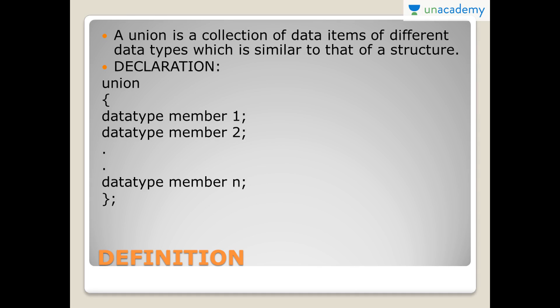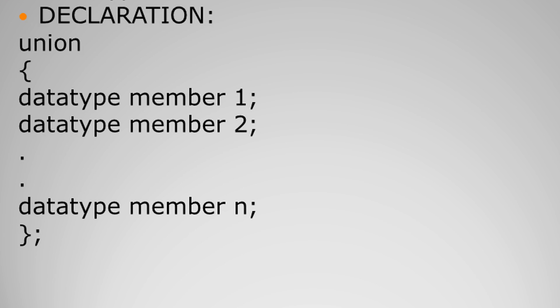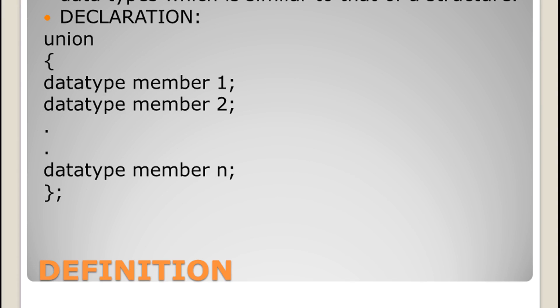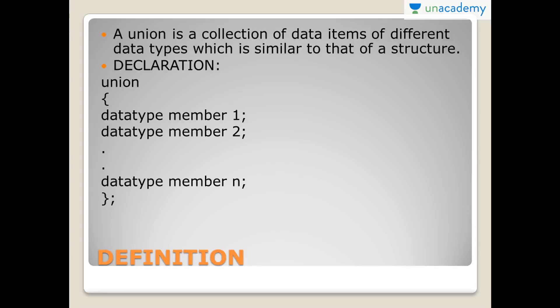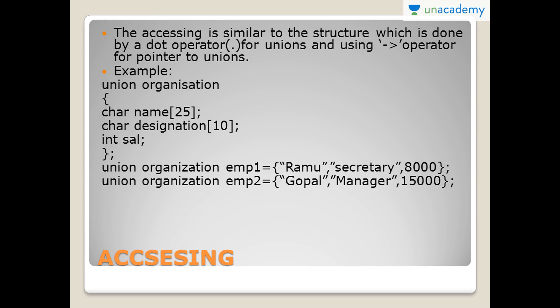First, let's see the definition. The basic definition, as I've told you, it is very similar — it is a collection of data items of different data types, which is similar to that of Structure. You can see the declaration is also very similar: DataType Number1, DataType Number2, like that of different data types. The basic difference is, in Structure we use the keyword 'struct', but in Unions we use the keyword 'union'. We can have N number of data types, which we can have in Structures also.